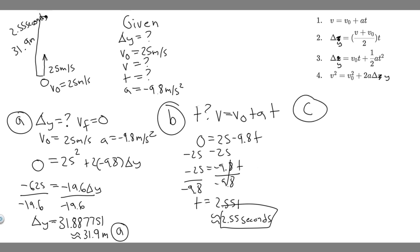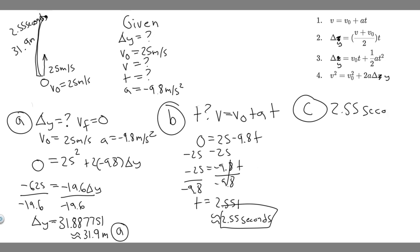Now C: how long does the ball take to hit the ground after it reaches its highest point? Here's something important to know: the time it takes to travel up to its highest point is the same as the time it takes to fall back down. Since it took 2.55 seconds to reach the highest point, it will take 2.55 seconds to fall back to the ground. So the answer to C is also 2.55 seconds.